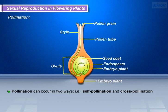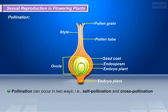After fertilization, the zygote divides several times to form an embryo within the ovule. The ovule develops a tough coat and is gradually converted into a seed. The ovary grows rapidly and ripens to form a fruit. Meanwhile, the petals, sepals, stamens, style, and stigma may shrivel and fall off. The seed contains the future plant or embryo, which develops into a seedling under appropriate conditions. This process is known as germination.